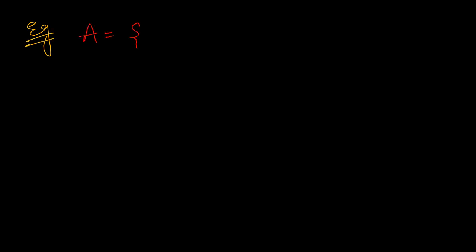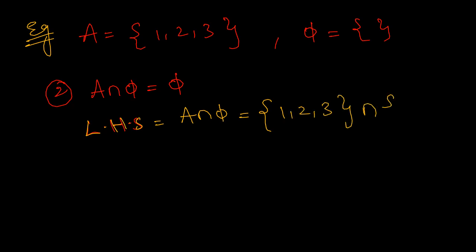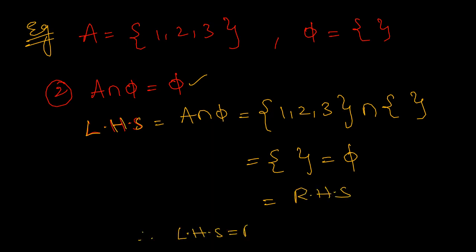Let us see an example of the second identity law. Let A = {1, 2, 3} and φ be the empty set. We need to prove A intersection φ equals φ. Taking the left hand side: A intersection φ = {1, 2, 3} intersection {} . Intersection means taking common elements. There are no common elements, so the result is φ. Therefore LHS equals RHS, which means A intersection φ equals φ. This is the second identity law.